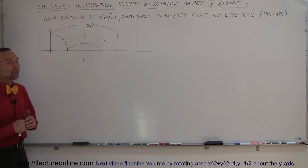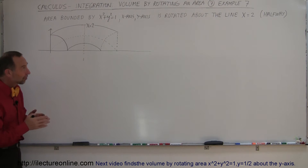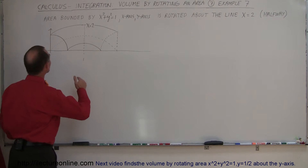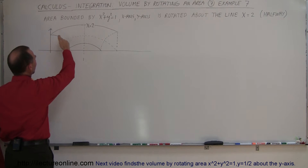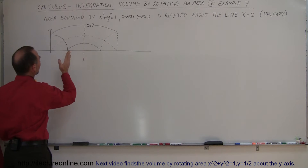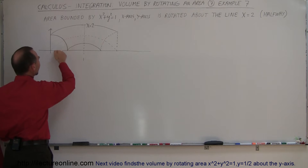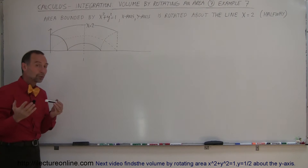Now we're going to do something slightly more challenging. The concept is the same — we have an area defined by three equations: x squared plus y squared equals 1, which is a circle. We're only going to take a quarter of that circle because the other two equations are the x-axis and the y-axis, which define the area we're going to rotate.